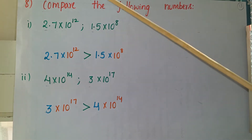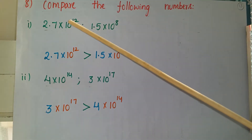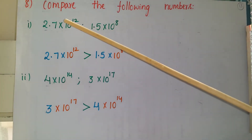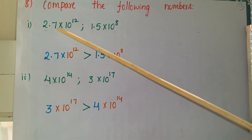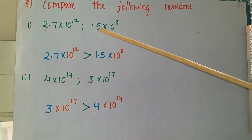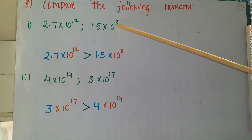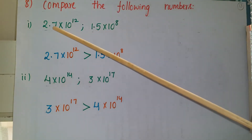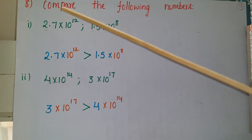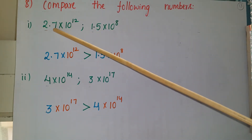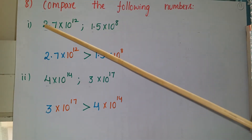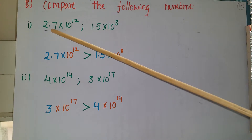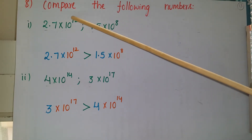This is the 8th problem from the same exercise — compare the following numbers. We have to compare two numbers given in exponent form. First: 2.7 into 10 to the power of 12. Second: 1.5 into 10 to the power of 8. Before comparing these numbers, we observe the leading numbers first: 2.7 and 1.5. Comparing these two, 2.7 is the bigger number.